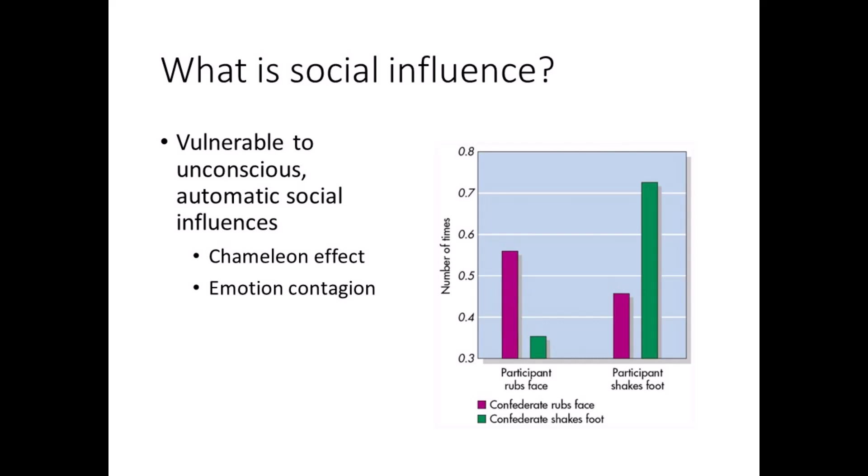One of the first researchers to study conformity was Muzafer Sherif. Participants sat in a darkroom and were asked to estimate how far a dot of light moved on the wall. The dot wasn't actually moving, but Sherif took advantage of an optical illusion called the autokinetic effect. It occurs when a stationary point of light appears to move, sometimes erratically, in various directions, even though it isn't moving at all.